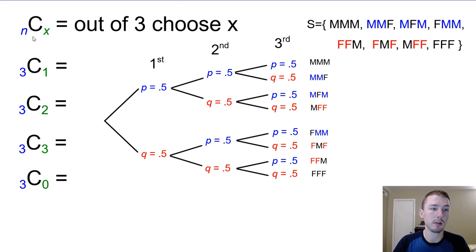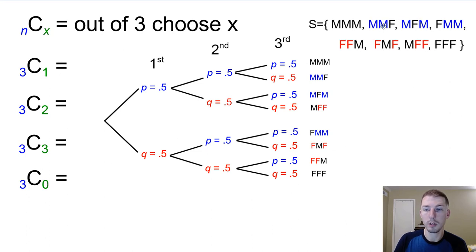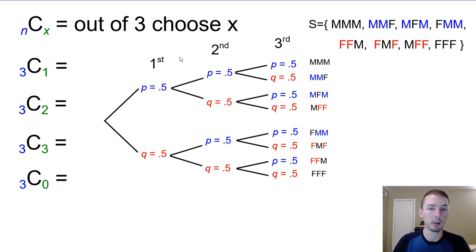This is combinations, written as nCx — out of n, choose x. For instance, with three children, three choose one means how many ways can we choose one out of three — there are three ways. Three choose two is the same: how many ways can we have two females? First two, first and last, or last two — also three. Three choose three has only one way: all three. Three choose zero also has only one way: all males. This gives us the pattern for all eight possible combinations.